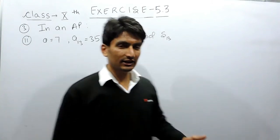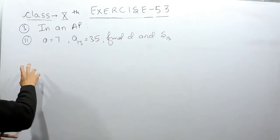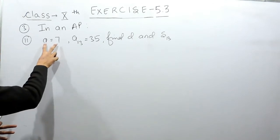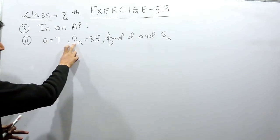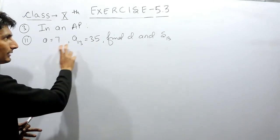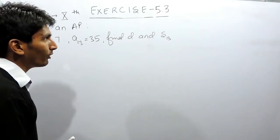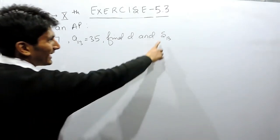Hello everyone, in this video we are going to solve the second part of question number three. In this case, there is an AP whose first term is 7 and A13 is 35, means the 13th term of that AP is 35. You have to find the common difference and the sum of those 13 terms.